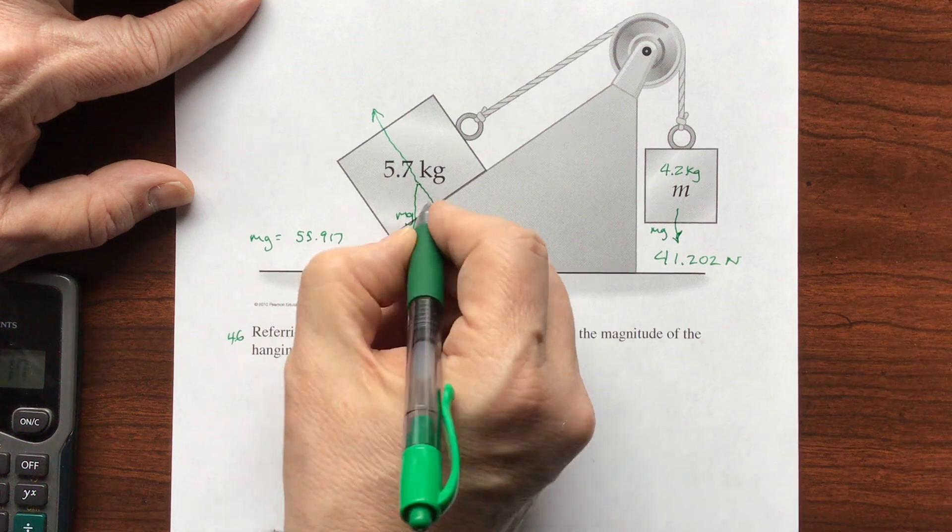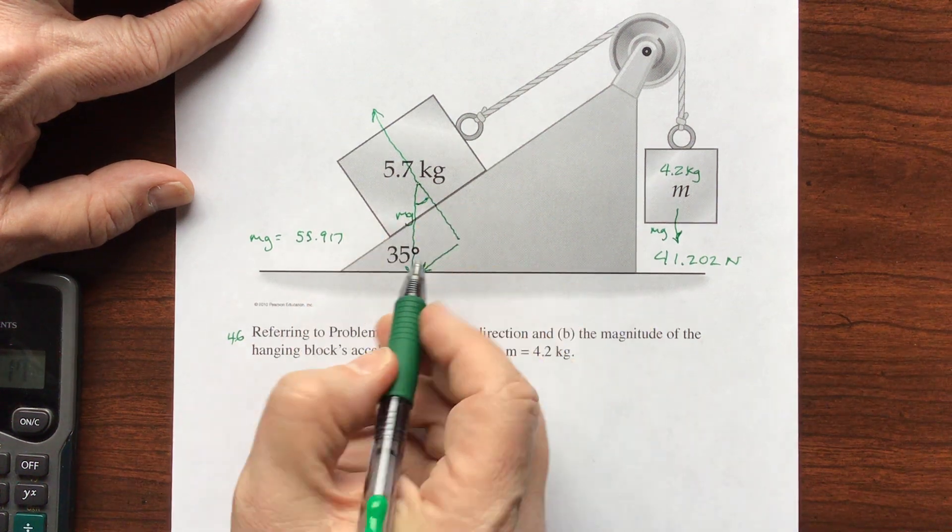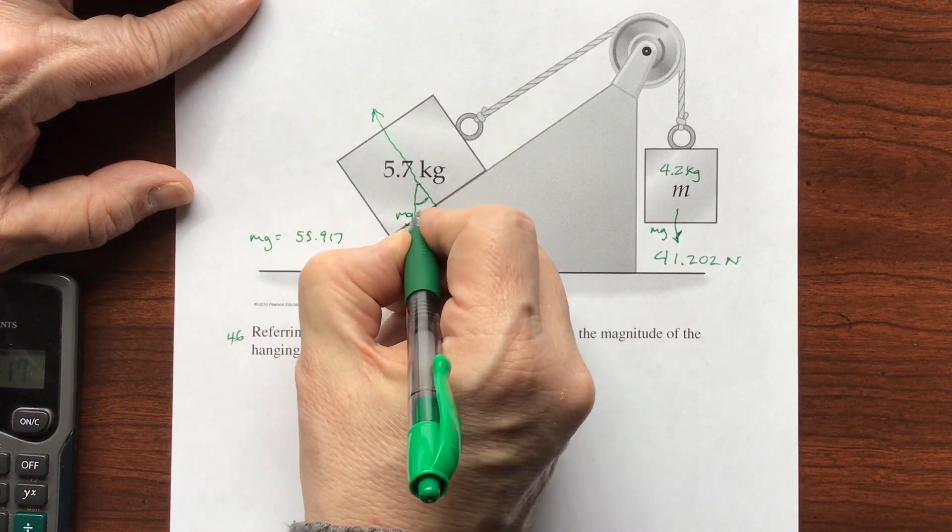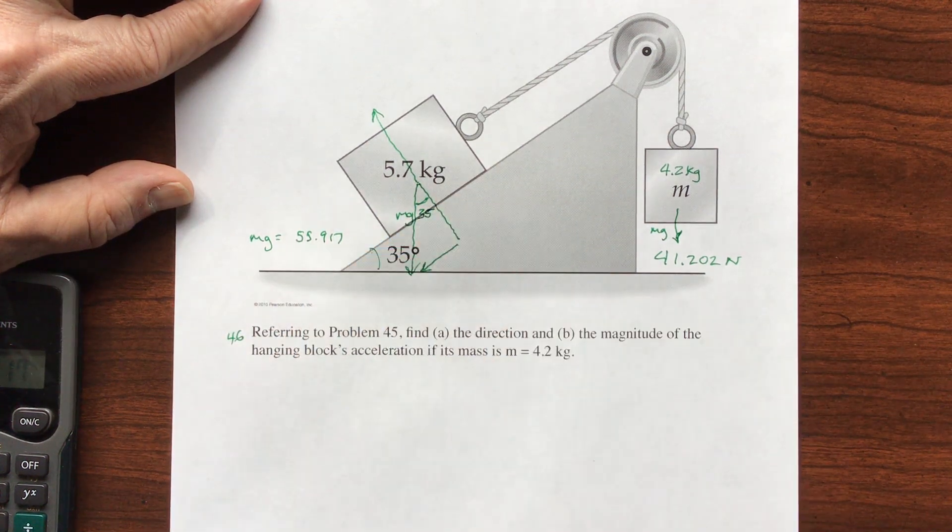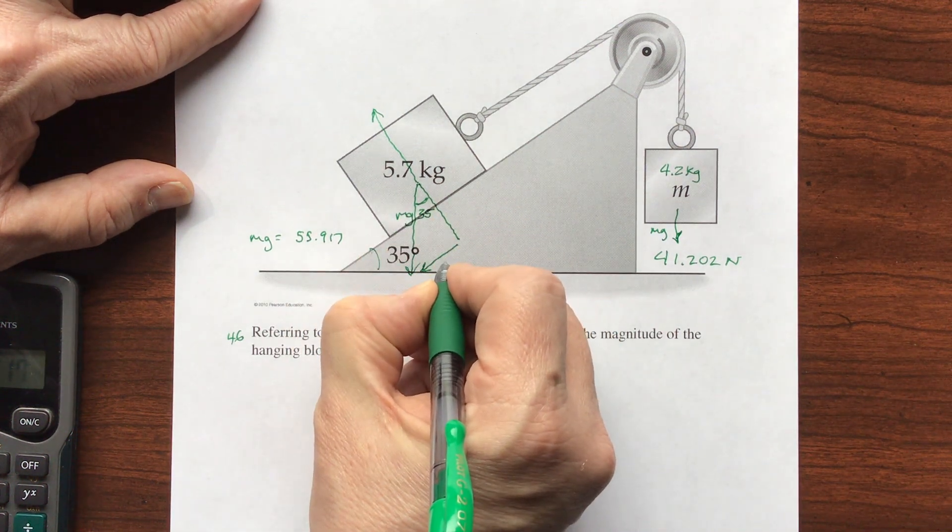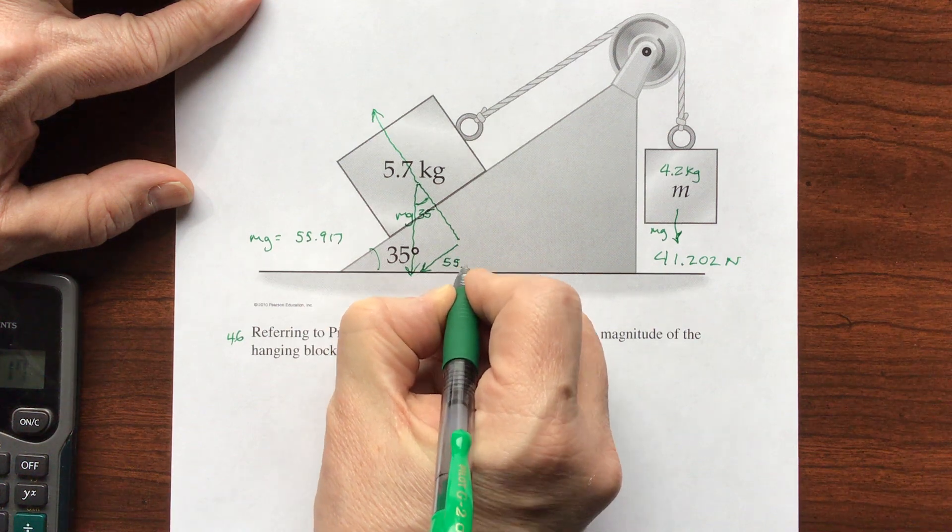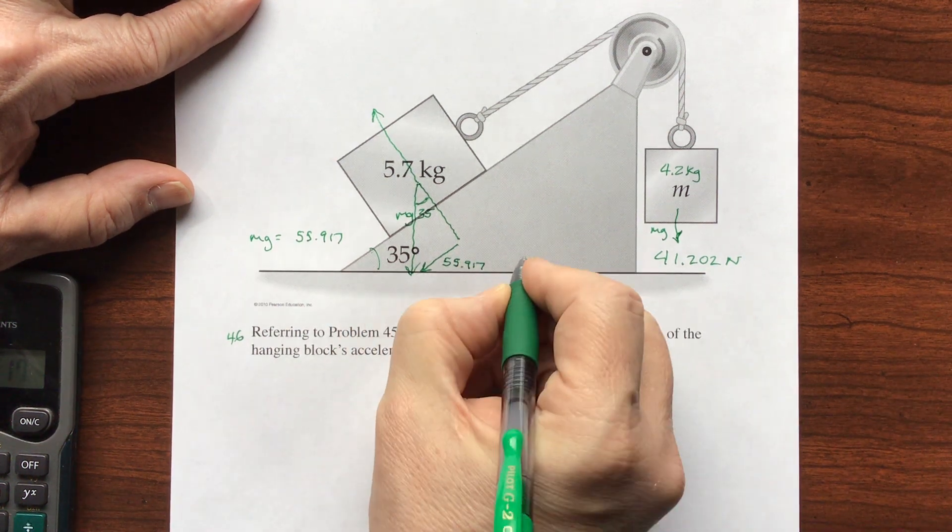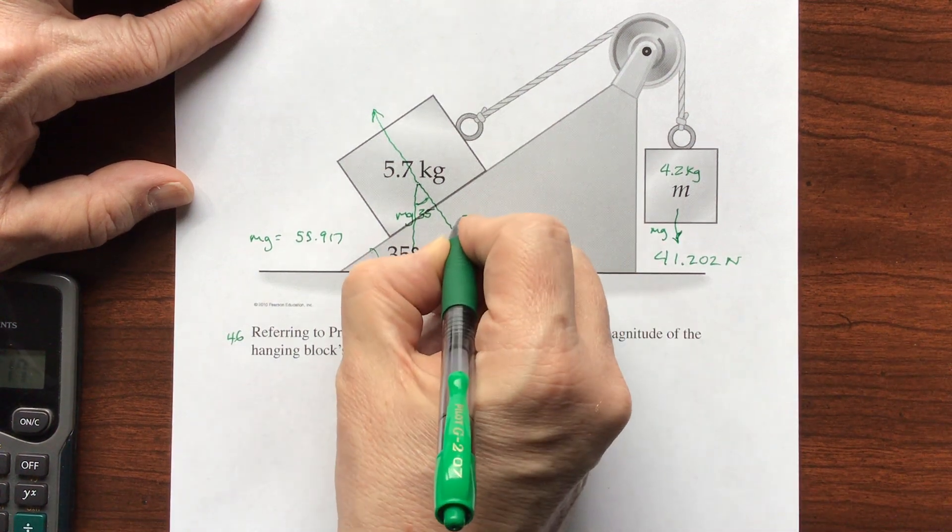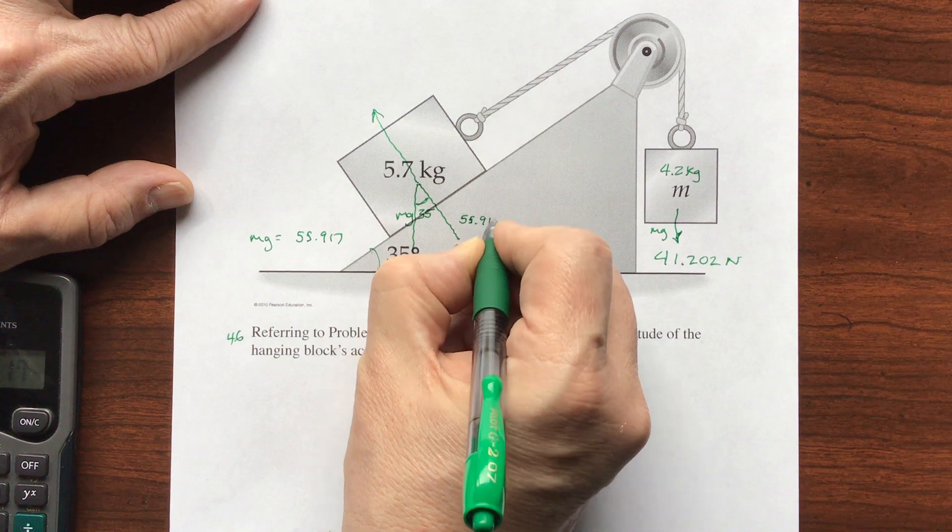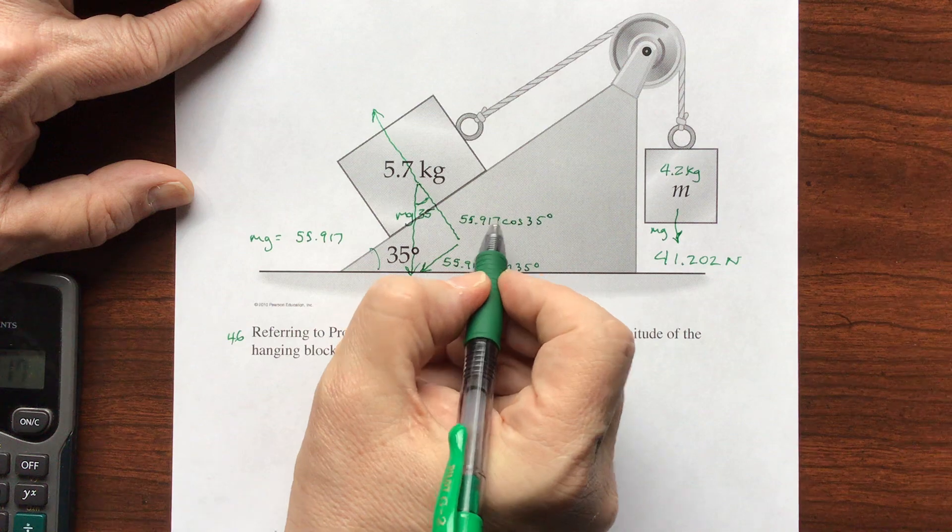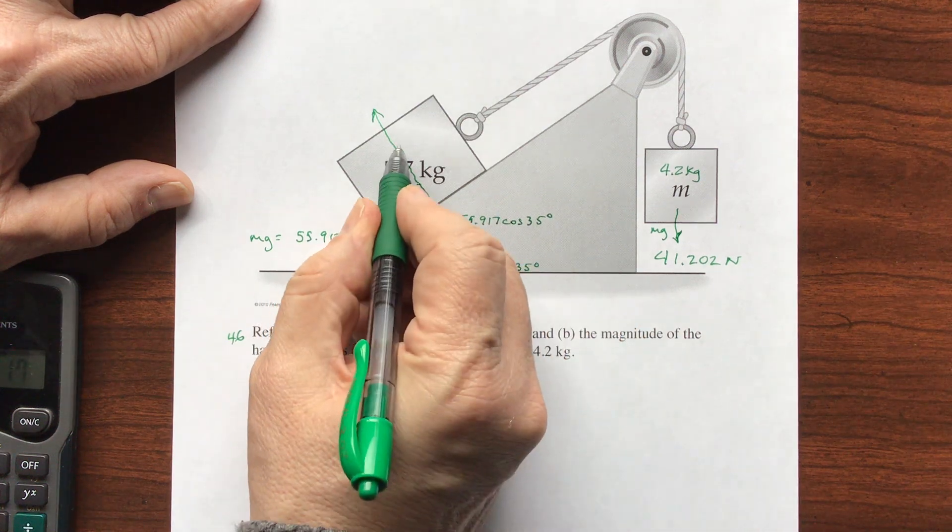If you do a 35-degree angle here, you're going to see these are corresponding triangles, so this is going to be also a 35. Using some trig, we see that this is going to be mg, which we know is 55.917, times the sine of 35 degrees, and this is 55.917 times the cosine of 35 degrees.